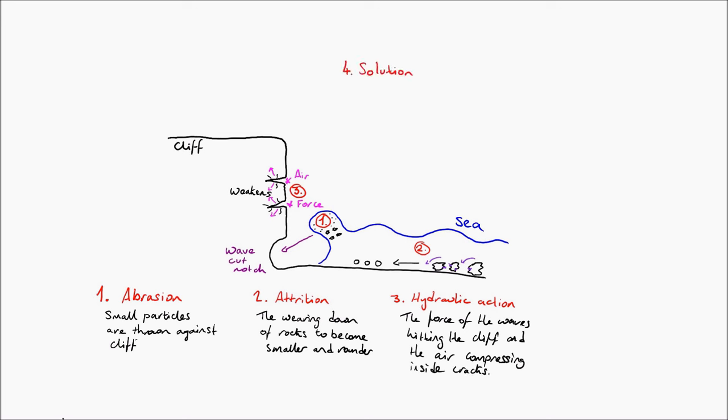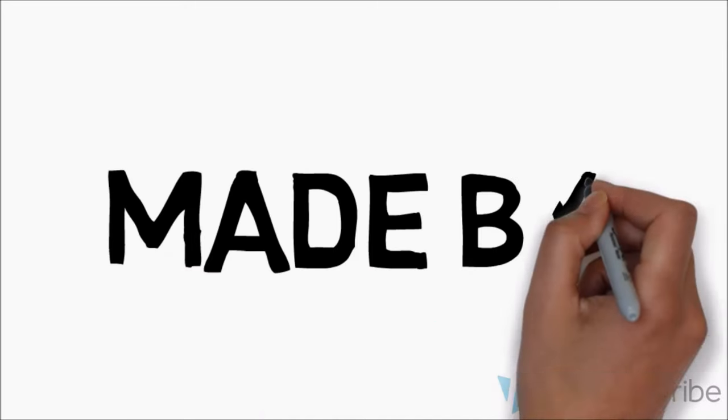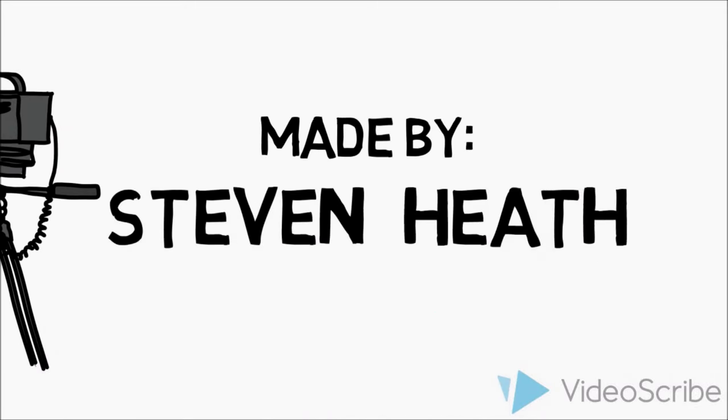And there is one more: solution. I can't really draw this one unfortunately on the diagram. It's literally the dissolving of rock due to the mild acidic properties that water has. These are the four types of erosion. Thank you very much. Have a great day.